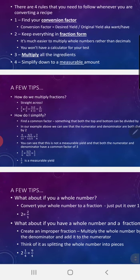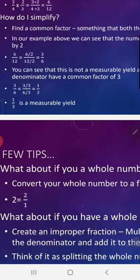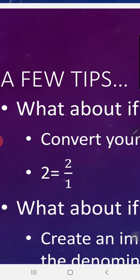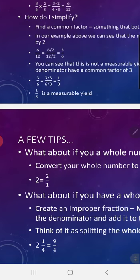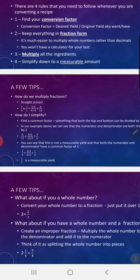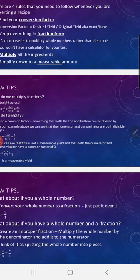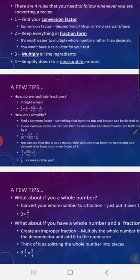If you have a whole number, convert it to a fraction by putting it over 1. So 2 equals 2/1, 3 equals 3/1 — it's that simple.